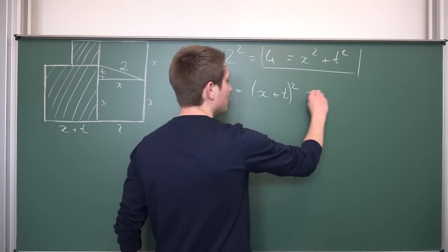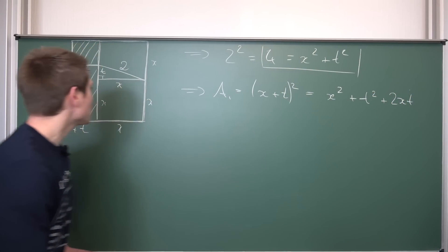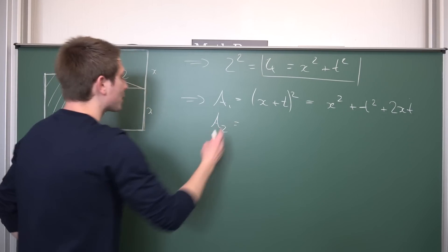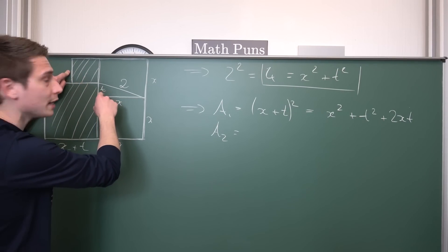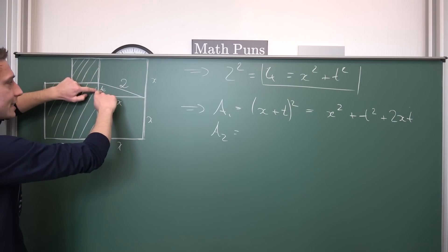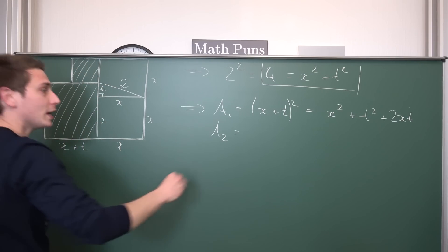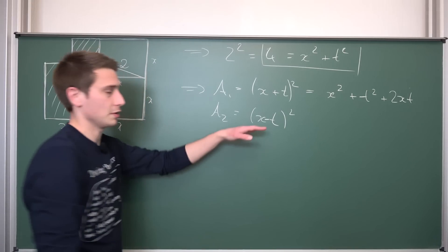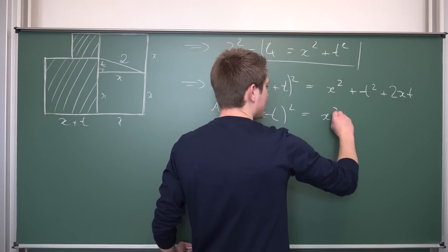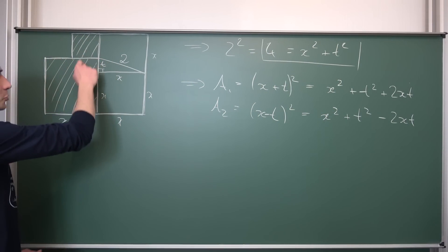Now (x + t) squared is just a simple binomial, meaning this results in x squared plus t squared plus 2xt. We also have the small square: its side length is x minus t, because we take t away from the full side length x. So area 2 equals (x − t) squared, which by the binomial theorem gives us x squared plus t squared minus 2xt.